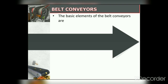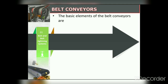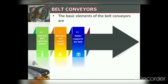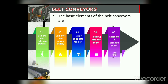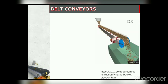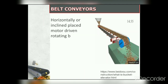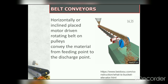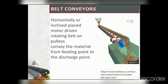Starting with belt conveyors: the basic elements are (1) belt and belt tightening systems, (2) belt drive and power supply, (3) roller support for the belt, (4) feeding arrangement, and (5) discharge arrangement. The principle involves a horizontally or inclined motor-driven rotating belt on pulleys, which conveys material from the feeding point to the discharge point.